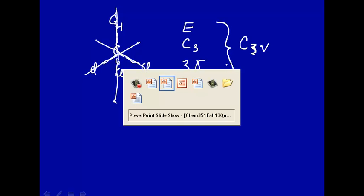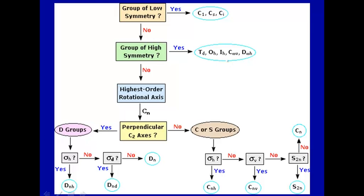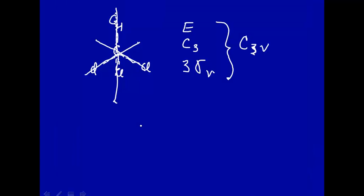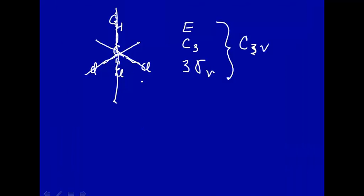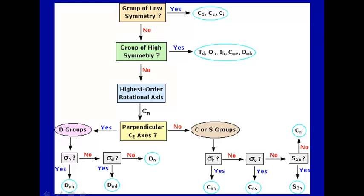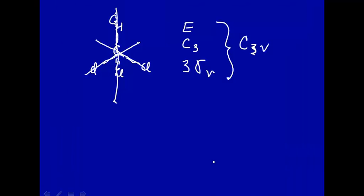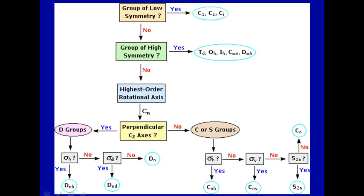We can confirm using the flowchart: it's not low symmetry, not linear, not one of the high symmetry groups. We have a C3 principal axis. Does it have perpendicular C2 axes? No, it doesn't. Is there a sigma h? No, there's just sigma v. Sigma v, yes — so it's C3v. That's how you use the flowchart to figure out it's C3v.